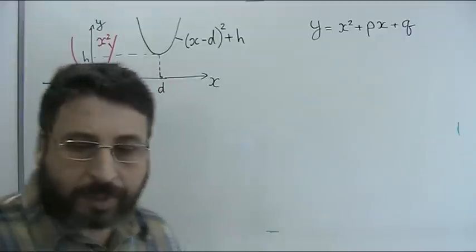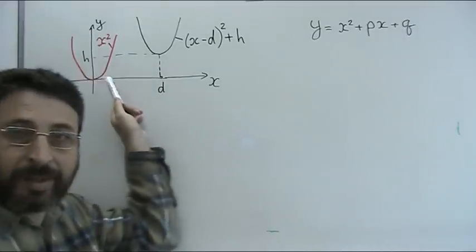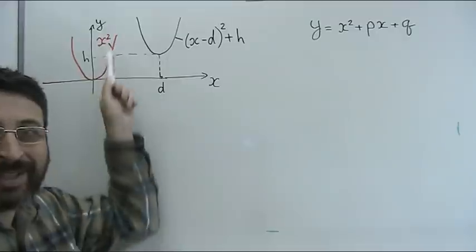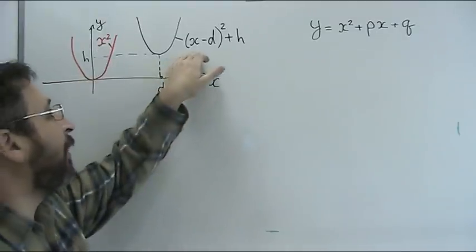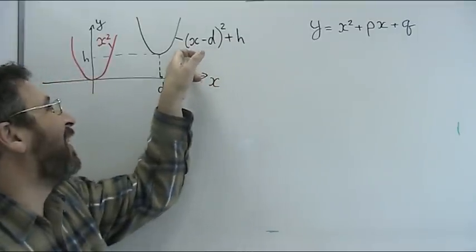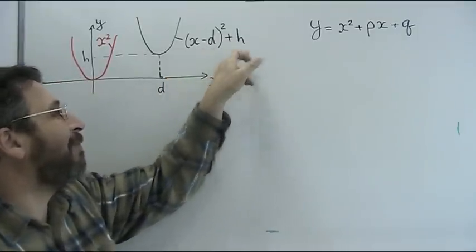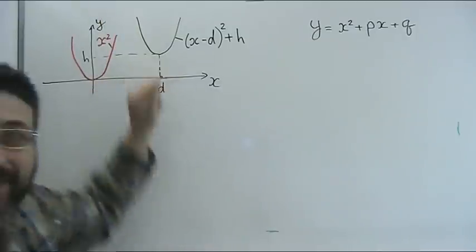Now, suppose that my function f(x) is a basic quadratic parabola, y equals x squared. Then the general parabola (x-d)² + h will be just shifted appropriately.